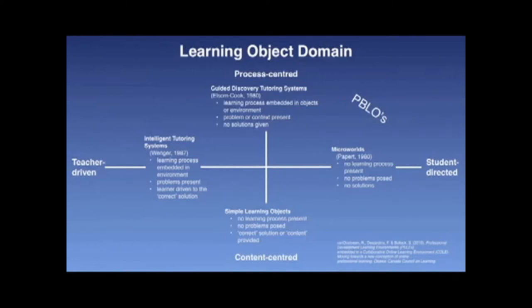One of the constructs in this grid concerns the control of the learning enterprise. In other words, is the control being exercised on the part of the teacher, or does the student have some measure of control as to what is being learned and how to learn it — student-directed? The other construct is oriented around the process-content dichotomy. These two constructs form the axes of the grid. The remainder of this video clip is devoted to a discussion of the characteristics of the various systems that give form to the learning object landscape. We will start with simple learning objects, found in the bottom center of the grid.